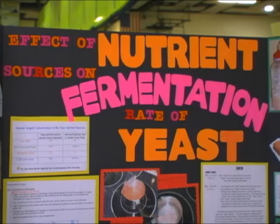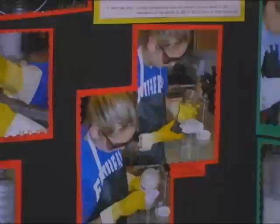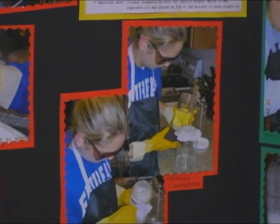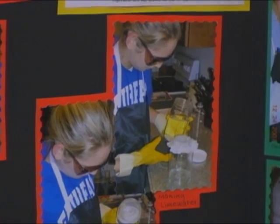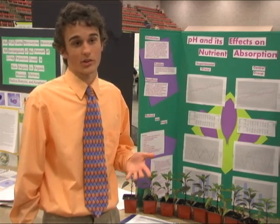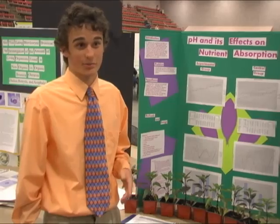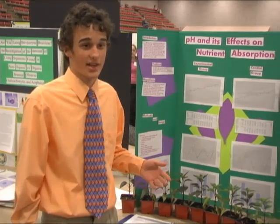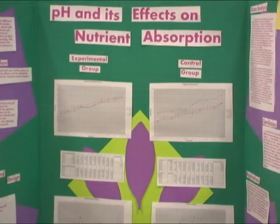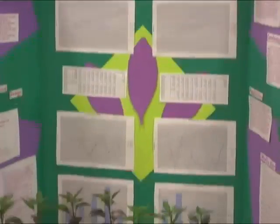My original hypothesis was that if yeast is provided different nutrient sources — water, sugar, flour, and corn syrup — then sugar would produce the greatest amount of growth and ferment the fastest. I originally wanted to know what grass grew best in, but grass wasn't as cool to look at as pepper plants, and I like hot peppers.